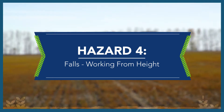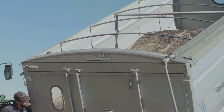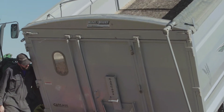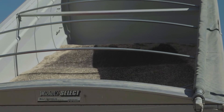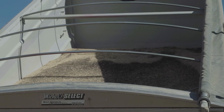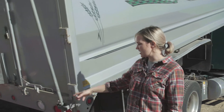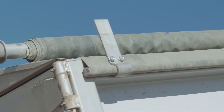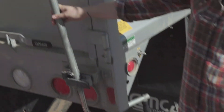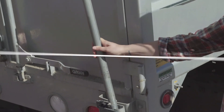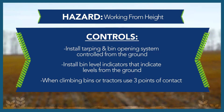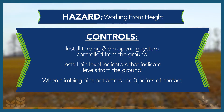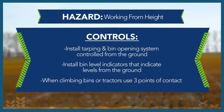Many older trucks require the farmer to climb up onto the truck in order to tarp it. This is a potential fall hazard where the farm worker could easily fall into the grain truck box or off the truck, causing injury. This truck is set up so we can tarp it from the ground — we don't need to climb up on the truck. We can do any of the tarping and untarping from this handle here. Install more automatic systems that allow you to tarp your truck from the ground, as this is the safest way to ensure that you don't have to climb onto the truck.